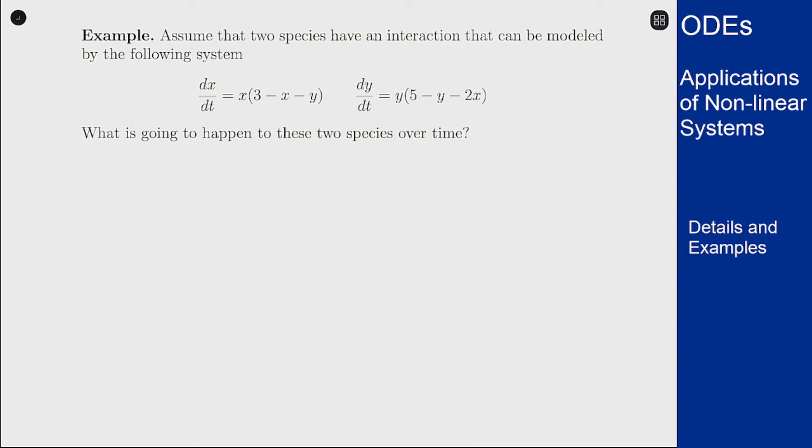So we have our model here: dx/dt is x times 3 minus x minus y, dy/dt is y times 5 minus y minus 2x.